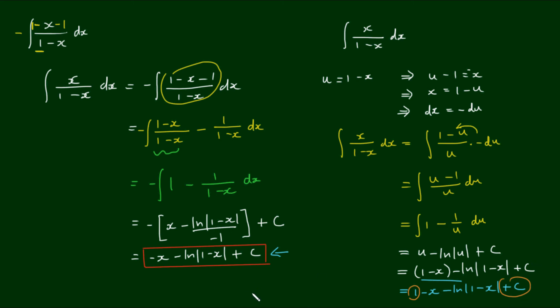So let's write our final answer here. Let's write this as negative x minus the log of 1 minus x plus, let's say, d, the constant d, where d is equal to c plus 1. So we see that we arrive at the same answer for both methods.